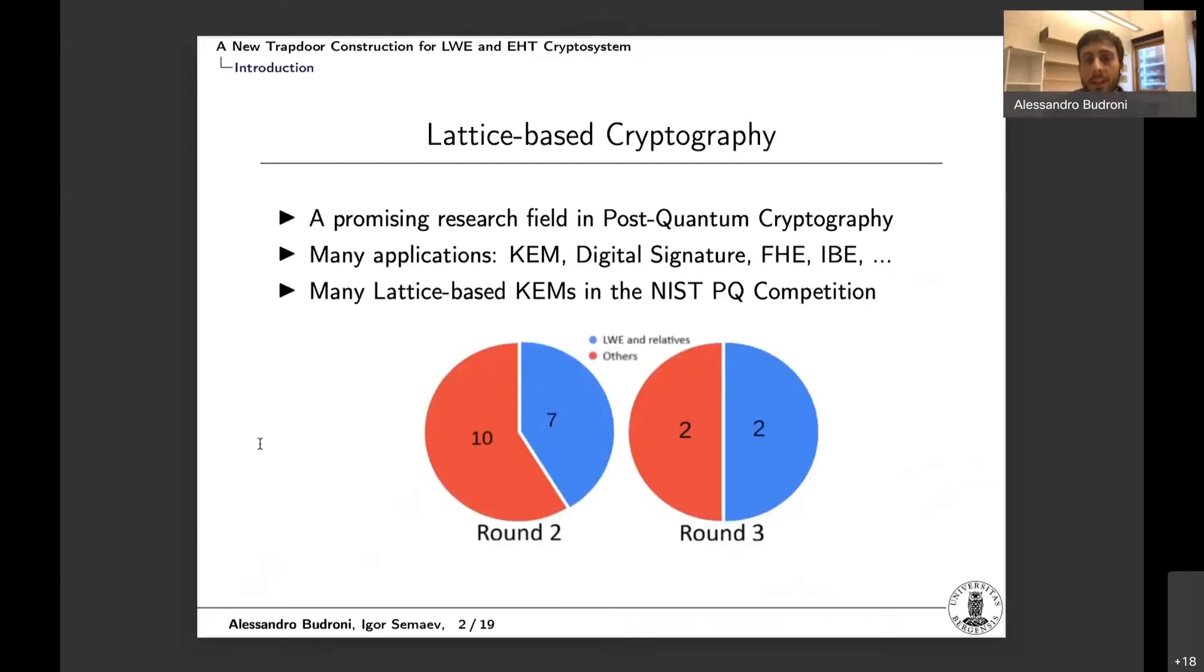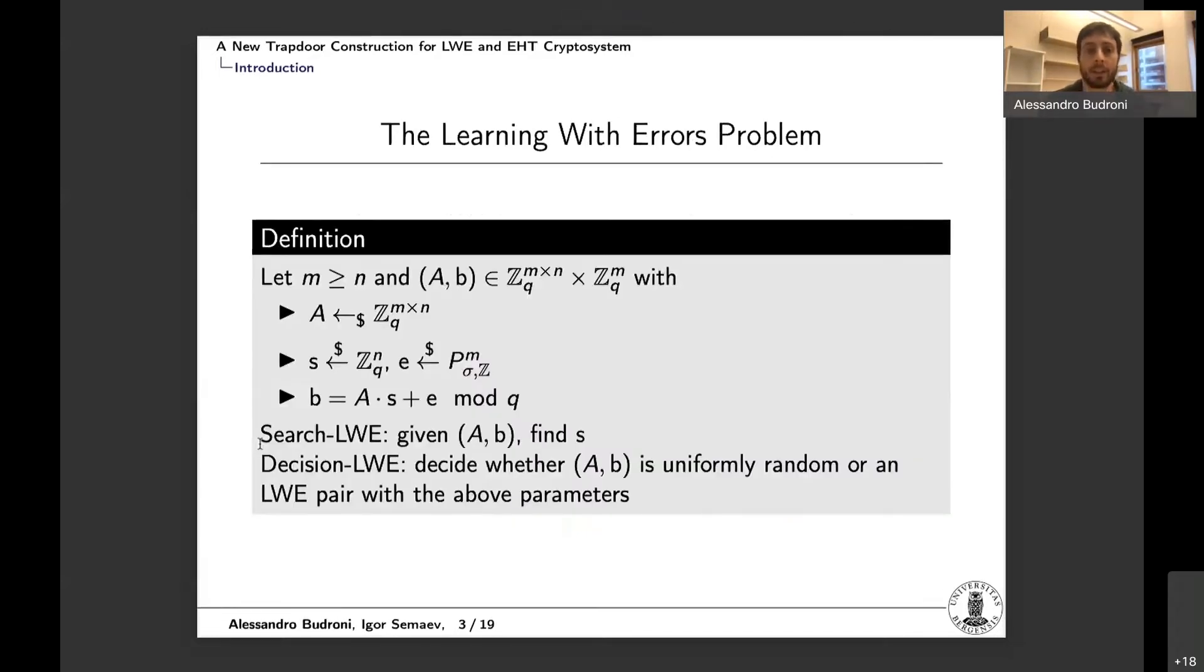This is a well known and promising research field in post quantum cryptography. One of the reasons is because it has been shown that you can create many cryptography applications using lattices, such as key encapsulation methods, digital signatures and et cetera. For example, if you look at the NIST post quantum standardization process, now at round 3, 4 out of 4 candidates that were upset, 2 are based on lattices.